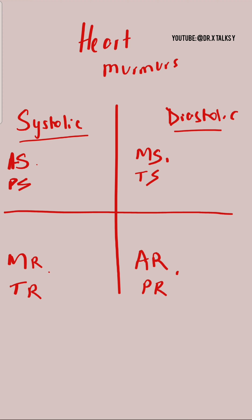These are the major murmurs and the major diseases. Now some additional points. In the top-left quadrant, just like we wrote AS, we can also add ASD, HOCM, and MVP.